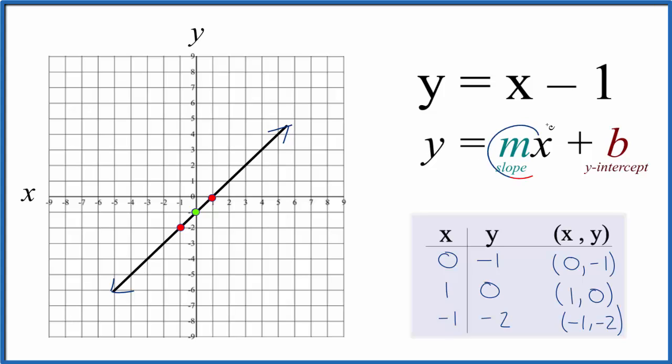For m, that's the slope. We think of it this way. We have 1x. We don't usually write the 1, but it's there. And we could write it as 1 over 1 as a fraction. It's still 1.